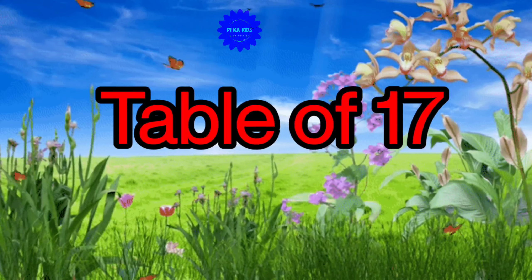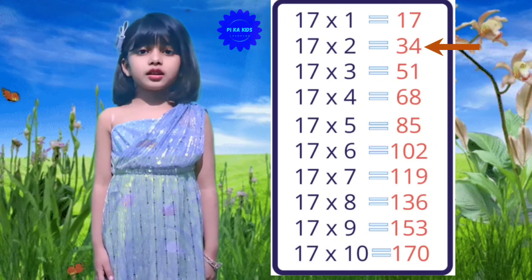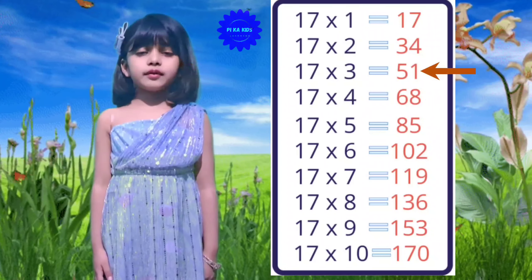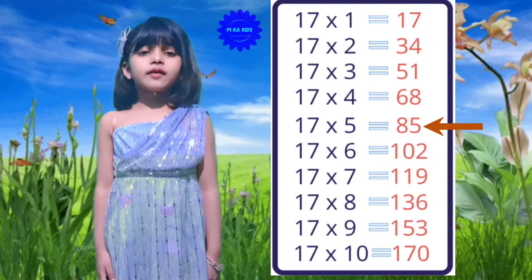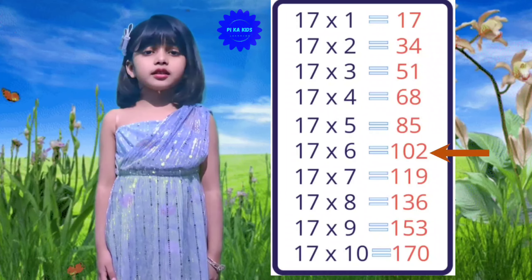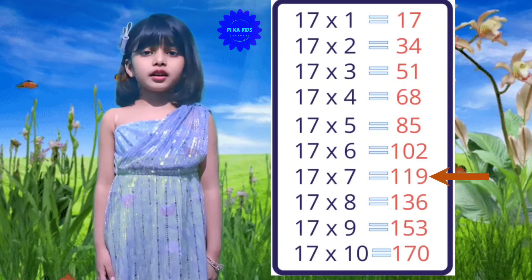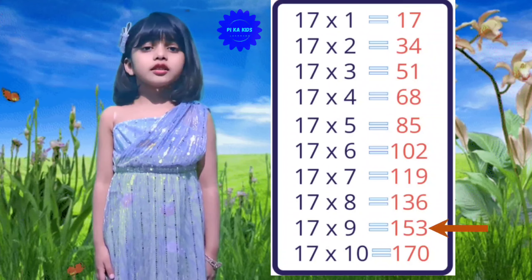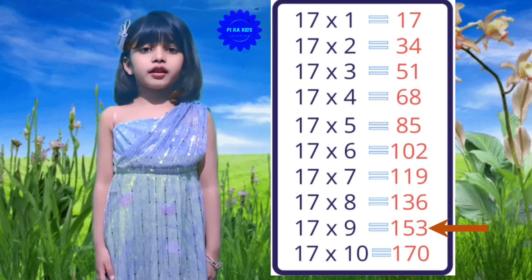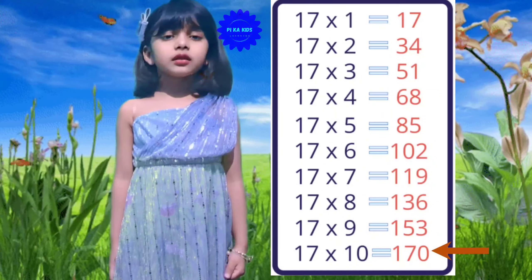Table of 17: 17 ones are 17, 17 twos are 34, 17 threes are 51, 17 fours are 68, 17 fives are 85, 17 sixes are 102, 17 sevens are 119, 17 eights are 136, 17 nines are 153, 17 tens are 170.